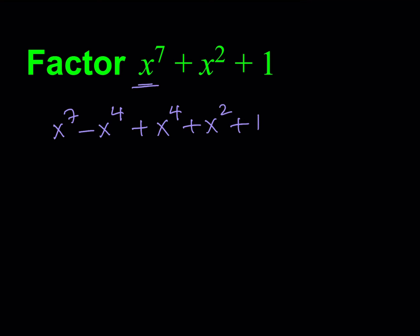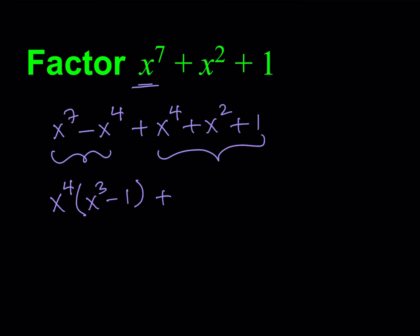We've done the first step, which is super important, because the rest is kind of easy. The rest depends on grouping, but since there are 5 terms, we're going to group them a little differently — it's not going to be even. We'll group these 2 together and these 3 together. If you take out x to the 4th, you're going to get x to the 3rd minus 1. This is the very reason why we look for 3 less than 7 — when you factor out the smaller power, you'll always get x cubed minus 1. Our goal is that after the split, these 2 pieces will have a common factor.